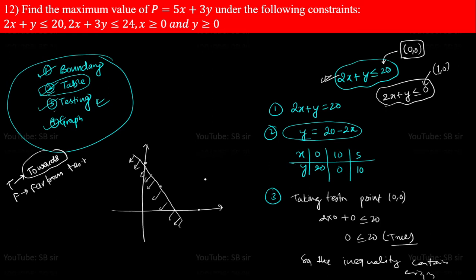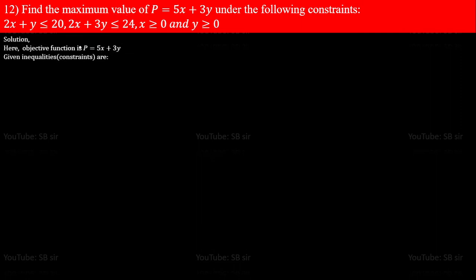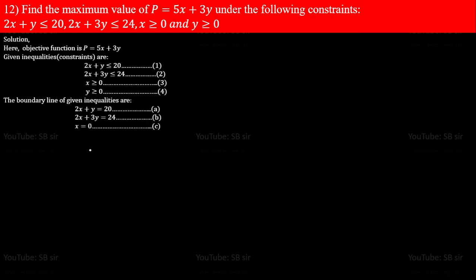Now let's solve the full question. The objective function is P = 5x + 3y — we need to find its maximum value. The given constraint inequalities are: 2x + y ≤ 20, 2x + 3y ≤ 24, x ≥ 0, and y ≥ 0. The corresponding boundary lines are: 2x + y = 20 and 2x + 3y = 24, obtained by changing the inequality sign to equals.